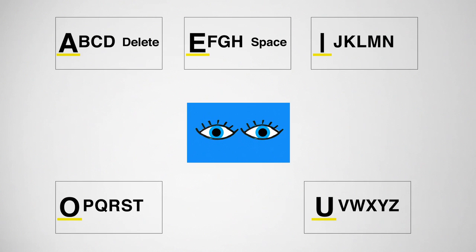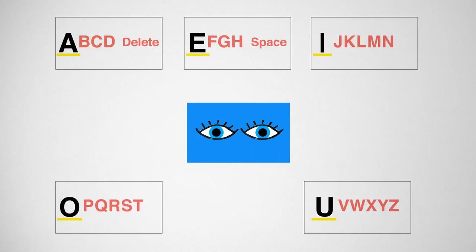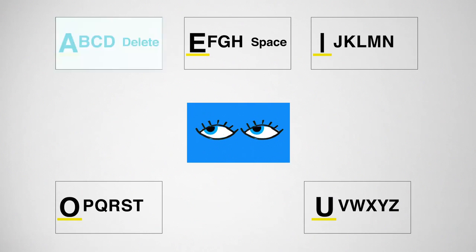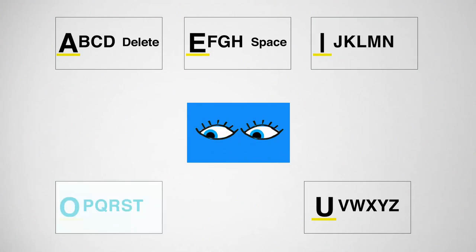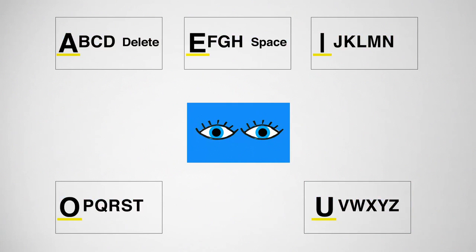Letters are broken into five sections. Each section is divided by a vowel and the letters that follow it in the alphabet. On the top row, you have the A section, followed by the E and I sections. On the bottom row, you have the O and U sections. Each vowel is followed by its subsequent letters in the alphabet.